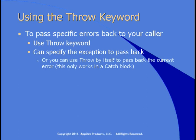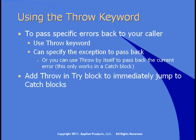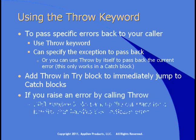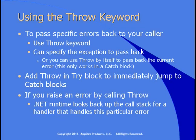And this may or may not be the actual exception that occurred. So what you might want to do is trap for three or four specific types of exceptions and throw back a more general one. If you use the throw keyword in a try block, then you'll immediately jump into the catch blocks. And when you raise an error yourself by calling throw, the .NET runtime looks back up the call stack for a handler.